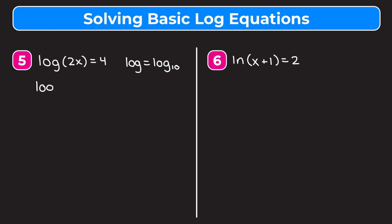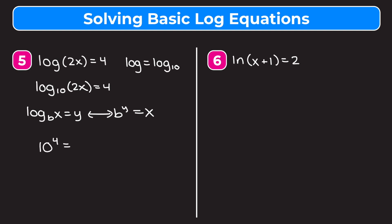Example 5: we rewrite log of 2x equals 4 as log base 10 of 2x equals 4. Converting to exponential form, we get 10 to the 4th power equals 2x. Since 10 to the 4th is 10,000, we have 10,000 equals 2x. Dividing both sides by 2, we get x is equal to 5,000.